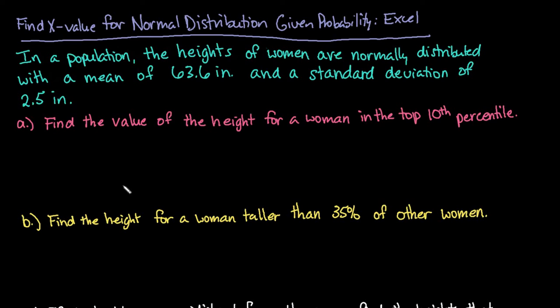Hi, for this video what I want to do is show you how to find the random variable x or the x value for a normal distribution when you're given either the probability or the percentage or something of that effect. And we are going to be using Excel to do that.